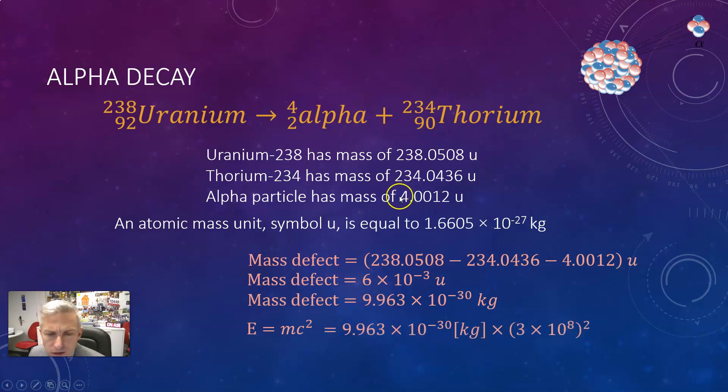Now by E equals mc squared you multiply that mass in kilograms by the speed of light squared and you get 9 times 10 to the minus 13 joules which is not a lot of energy in joules but it is a lot of energy for one alpha particle because its mass is so small.